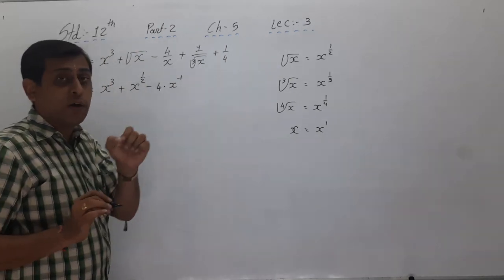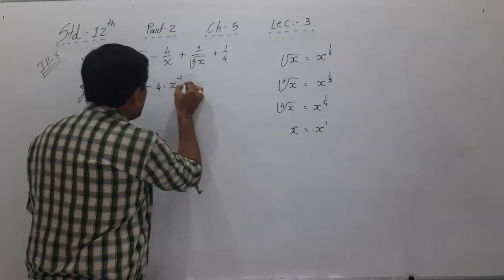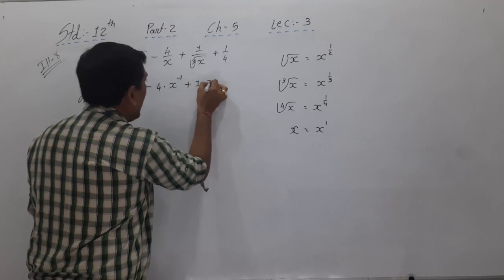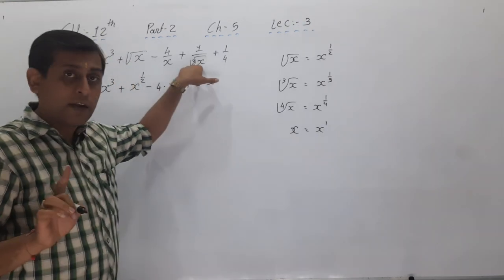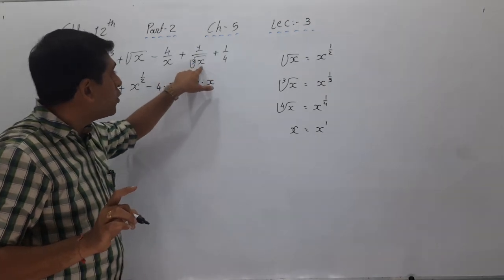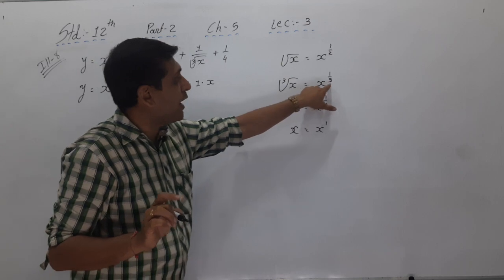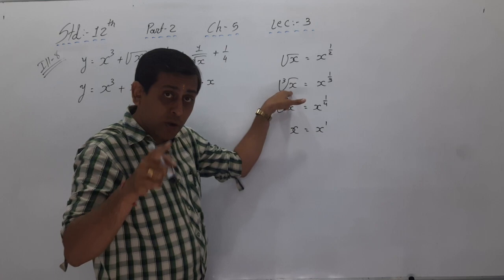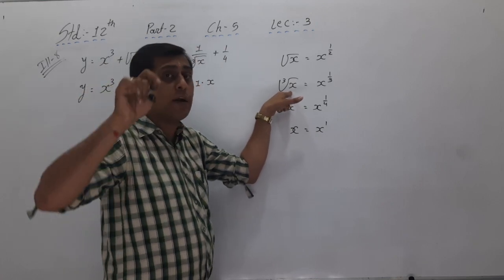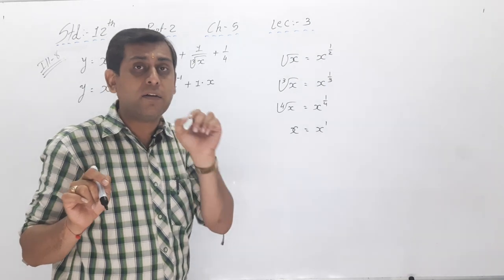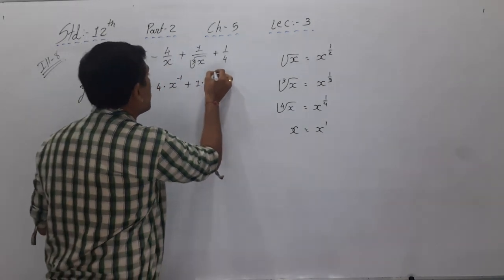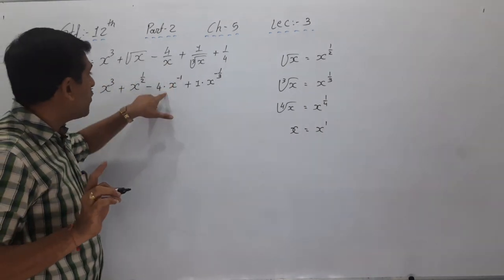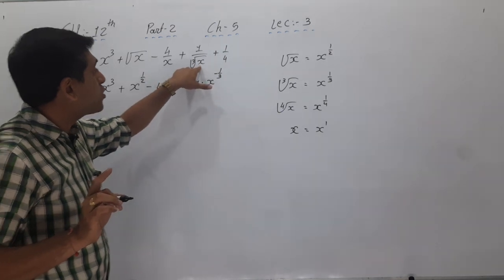Now see the recap once more: y = x³ + √x - 4/x + 1/∛x + 1/4. First simplify: y = x³ + x^(1/2) - 4x⁻¹ + x^(-1/3) + 1/4. Then differentiate using y = xⁿ → dy/dx = n·xⁿ⁻¹: giving 3x² + (1/2)·x^(-1/2) - 4·(-1)·x^(-2) + (-1/3)·x^(-4/3) + 0.